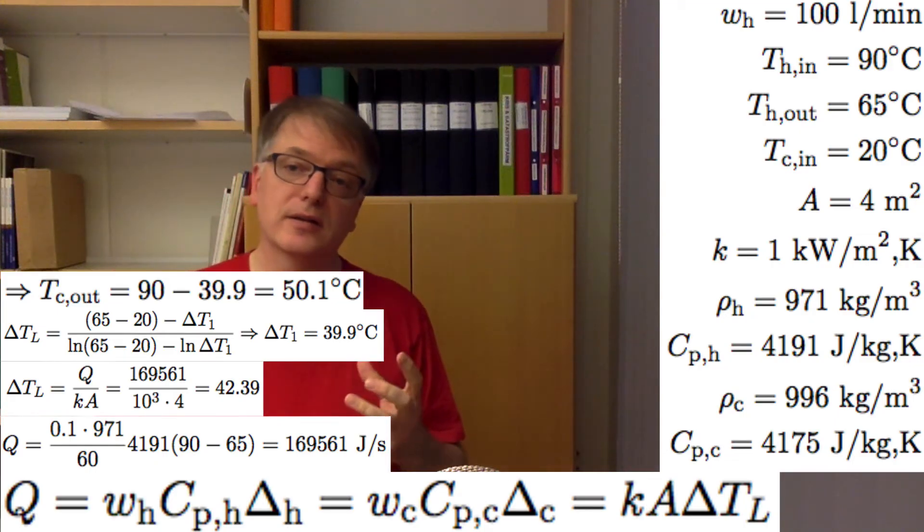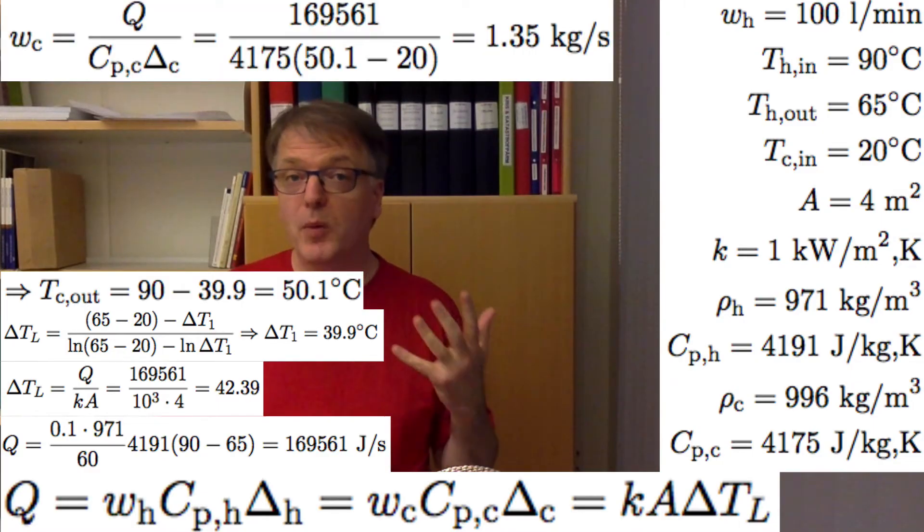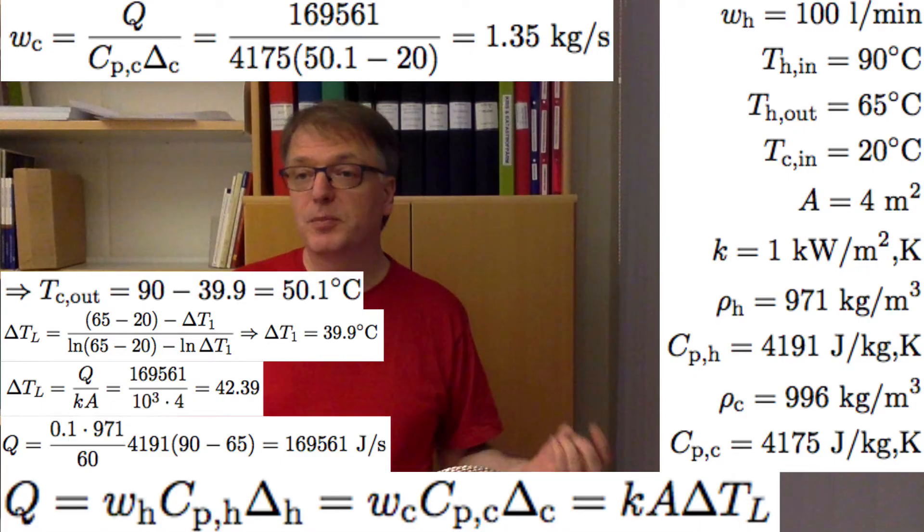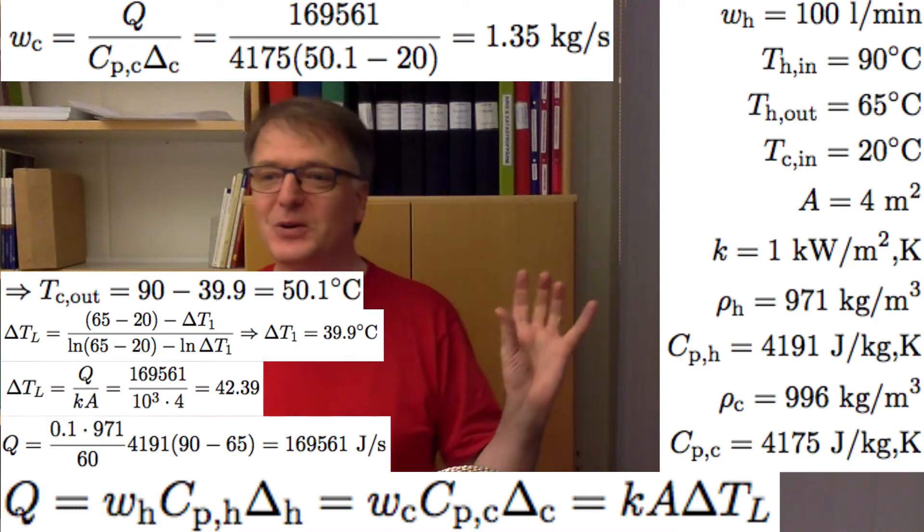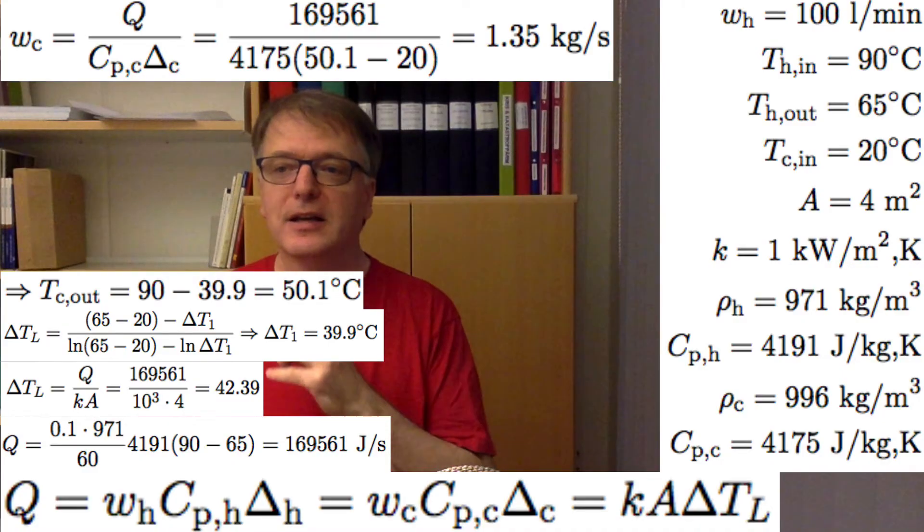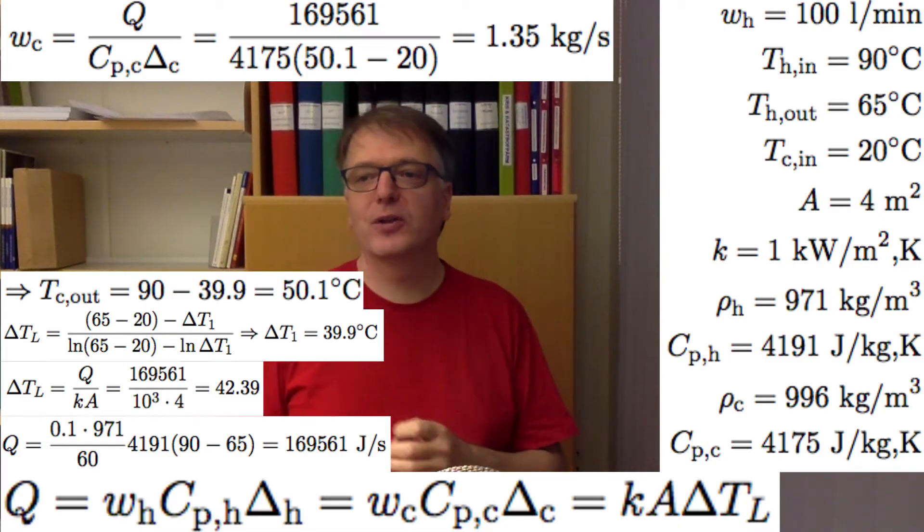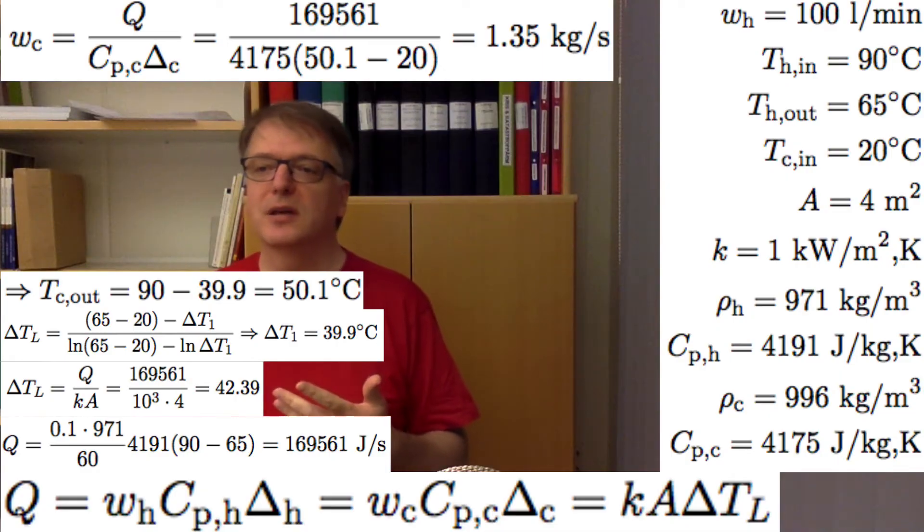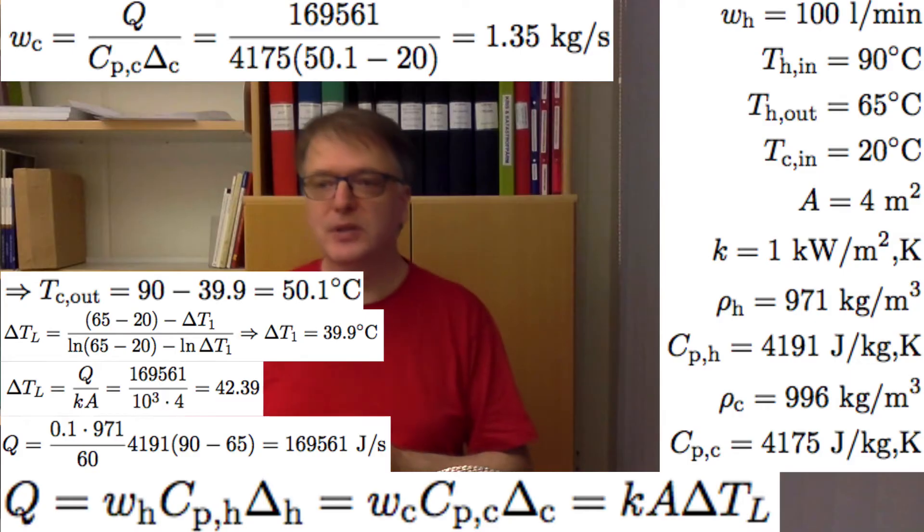So we can calculate the mass flux now because now we also know how much the temperature increased for the cold medium. That's 50.1 minus the inflow temperature, 20, that's 30.1 degrees Celsius. Let's check that things look right here. If you take the heat capacity of the cold medium times the temperature change, that's larger than the heat capacity of the hot medium times the temperature difference, and that should result in mass flux w₂ that's less than w₁.